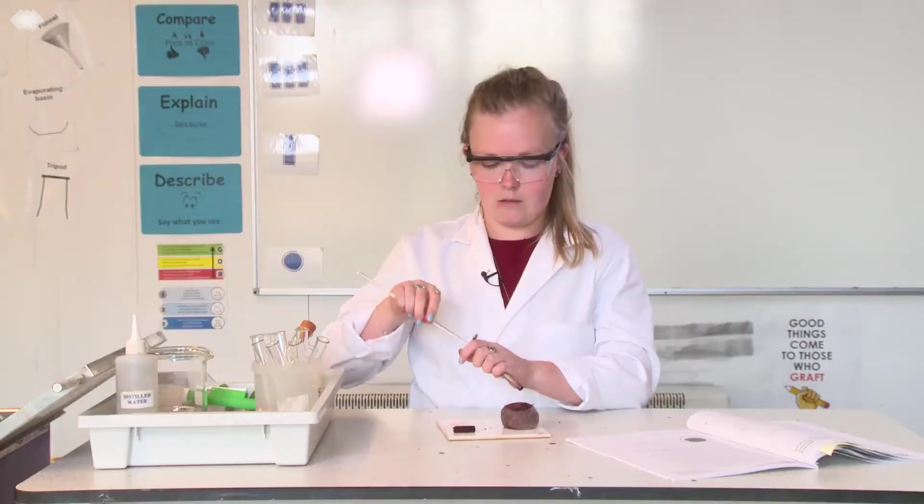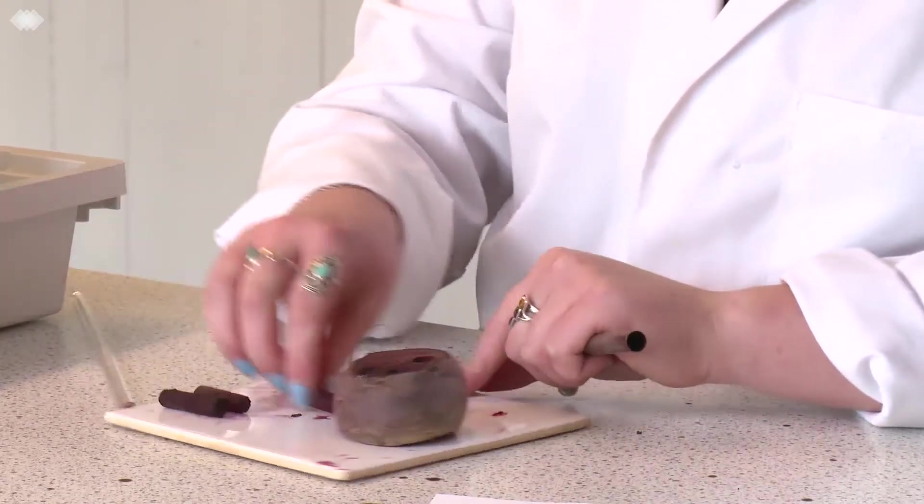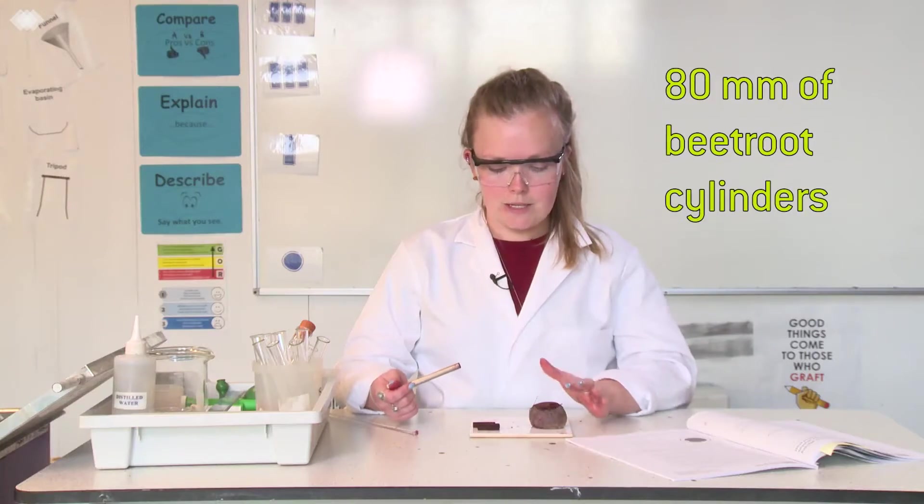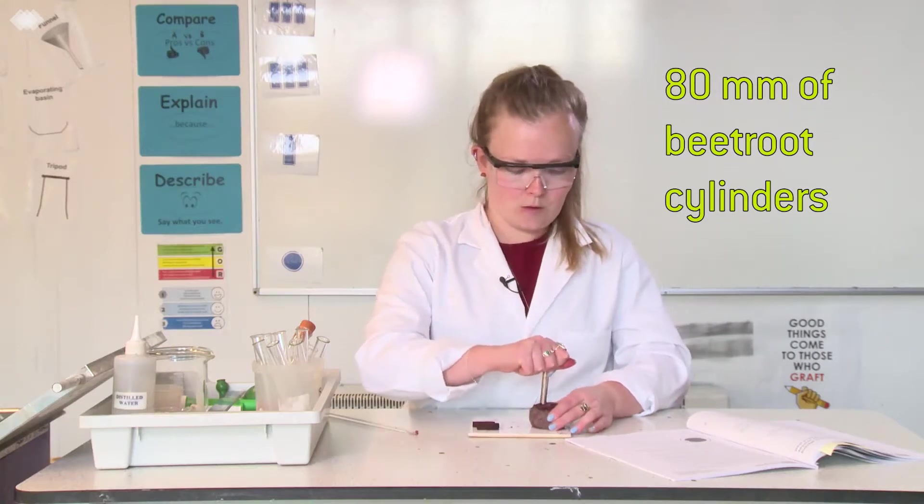And push out the cores with a glass rod. You will need about 80 millimeters worth of beetroot, so four corers.